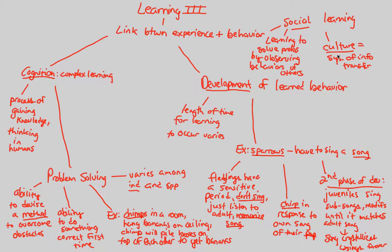Overall, these are our complex learning procedures and ways to understand behavior. We always want to return to the link between experience and behavior. The fledglings' experience, and the chimps' experience, both combine directly with a learned behavior — that is the core of everything we've studied in learning.